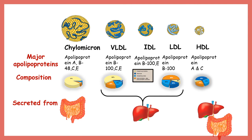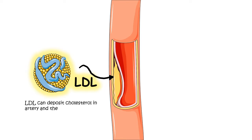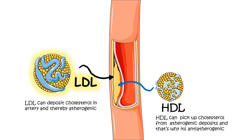LDL, also known as bad cholesterol, deposits excess cholesterol in the arteries, increasing the risk of coronary artery diseases — making it atherogenic. In contrast, HDL scavenges excess cholesterol from the arterial space and returns it to the liver, making it anti-atherogenic and better for our health.